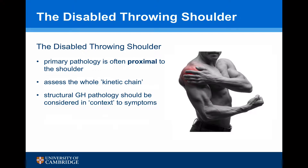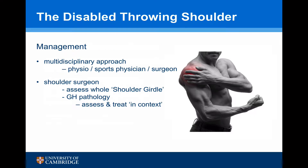As a shoulder surgeon, when assessing a patient with a disabled throwing shoulder, it's important to remember that the primary pathology is often proximal to the shoulder, and it's important to assess the whole of the kinetic chain. Structural pathology should be considered in context to these symptoms. Management should be undertaken as a multidisciplinary approach, looking at the physiotherapist, sports physician, and surgeon.